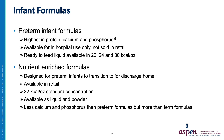When it comes to infant formulas, there are many options. Each formula is designed for patients of a particular age. Preterm infant formulas are for use in preterm infants — they have the highest protein, calcium, and phosphorus content. They are available for in-hospital use only, not sold in the retail setting, and come as ready-to-feed liquids in 20, 24, and 30 calories per ounce. Nutrient-enriched formulas are designed for preterm infants transitioning to discharge home. They come in a standard concentration of 22 calories per ounce and are available as both liquids and powders. These formulas have less calcium and phosphorus than preterm formulas, but more than term formulas.